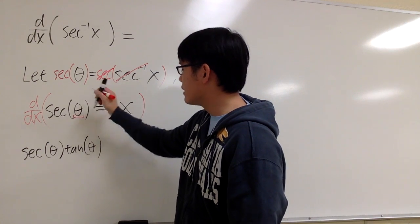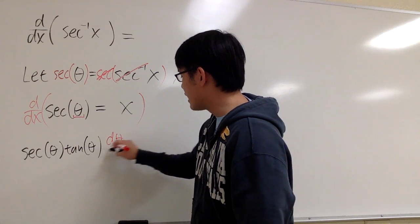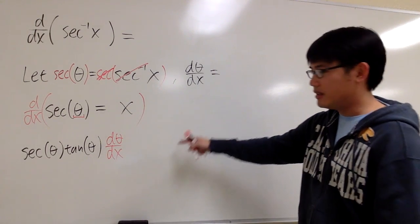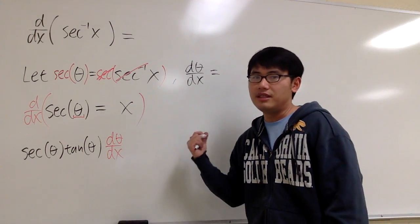To take the derivative of theta, that will give you dθ/dx. And this is how we can squeeze out the dθ/dx. And this is also because of the implicit differentiation.